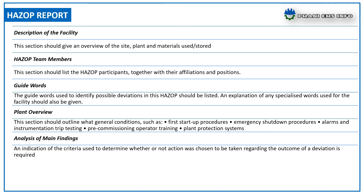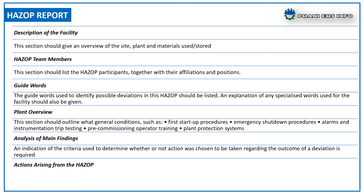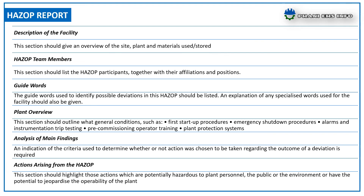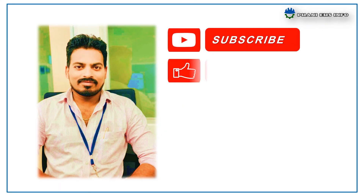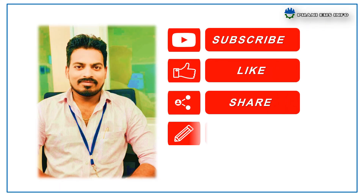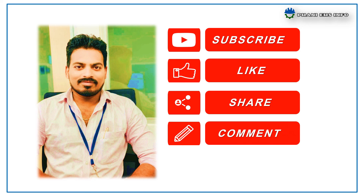The analysis of main findings section provides an indication of the criteria used to determine whether or not action was chosen to be taken regarding the outcome of a deviation. The actions arising from the HAZOP section should highlight those actions which are potentially hazardous to personnel, the public, or the environment, or have the potential to jeopardize the operability of the plant. This is all about the HAZOP study. Thanks for watching and have a safe day.